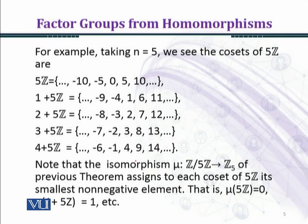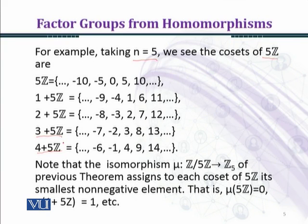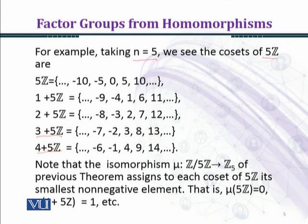Now we shall take a particular example for n equal to 5. We see that the cosets of 5Z are: 5Z, 1+5Z, 2+5Z, 3+5Z, and 4+5Z. Here 0, 1, 2, 3, and 4 are the remainders when an integer is divided by 5. The class 5Z contains all multiples of 5. Adding 1 gives 1+5Z, adding 2 gives 2+5Z, and similarly 3+5Z and 4+5Z. All classes are disjoint.